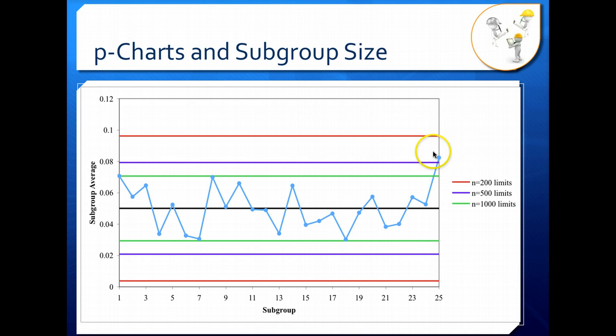We need to know the subgroup size because if it's bigger than 500, we're out of control. But if it's somewhere around 200 or 300, this point may actually be in control.